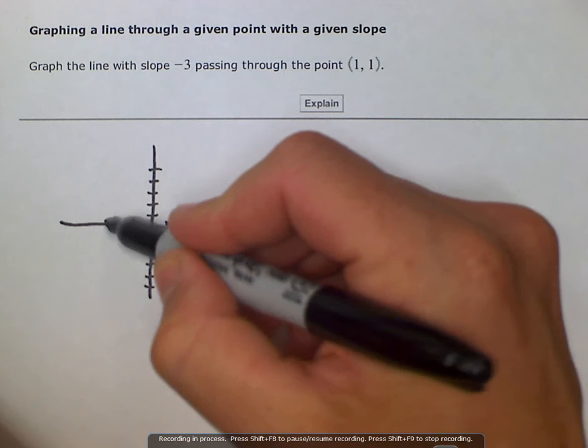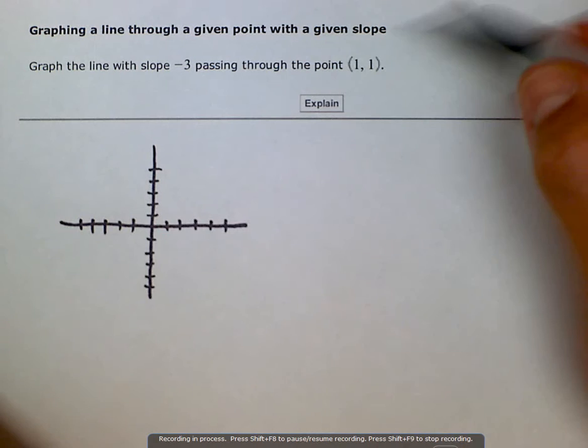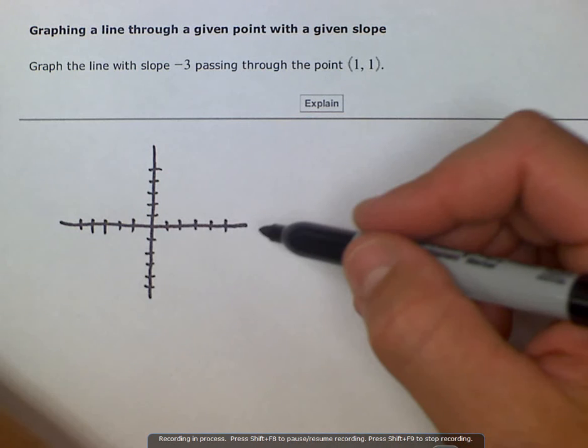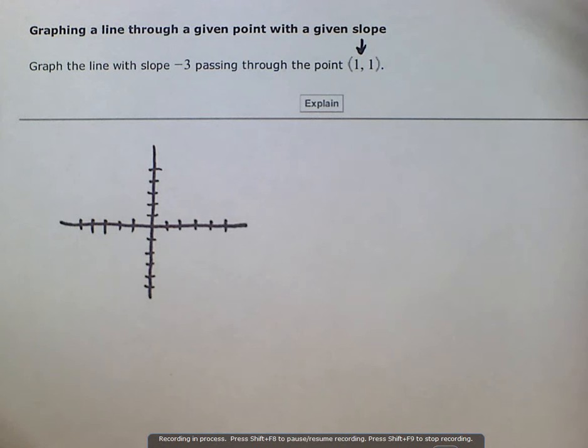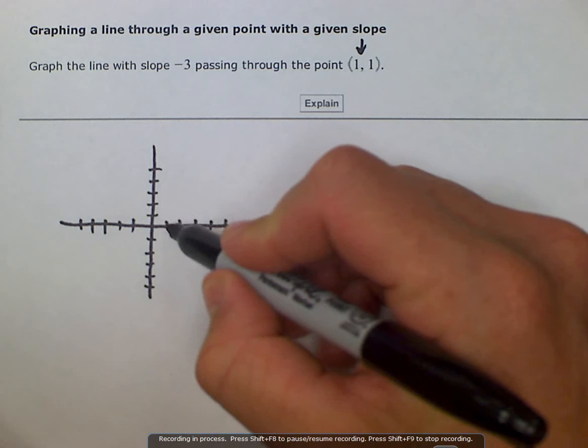And granted this is freehand so there's a small margin of error there. Here's our point 1, 1, so we will go from the origin over 1 up 1. This is our point 1, 1.